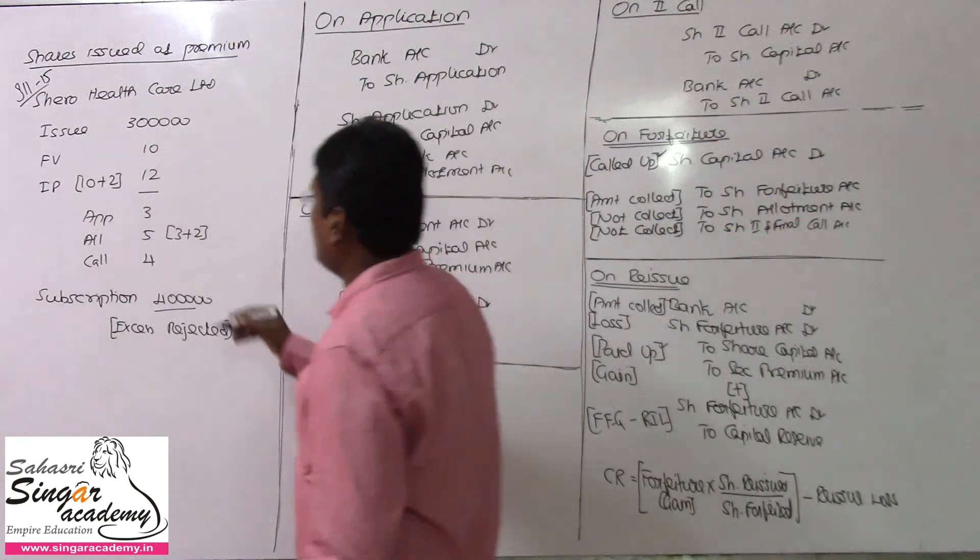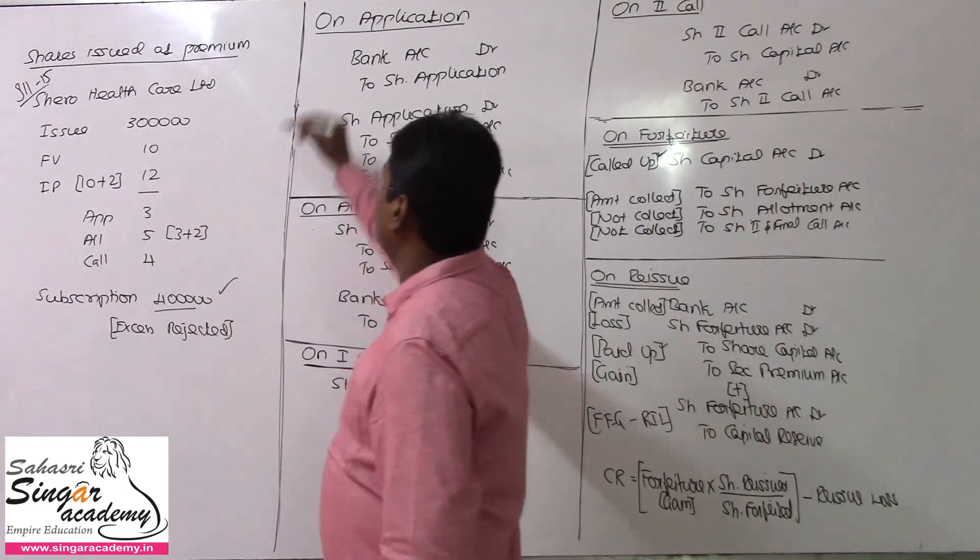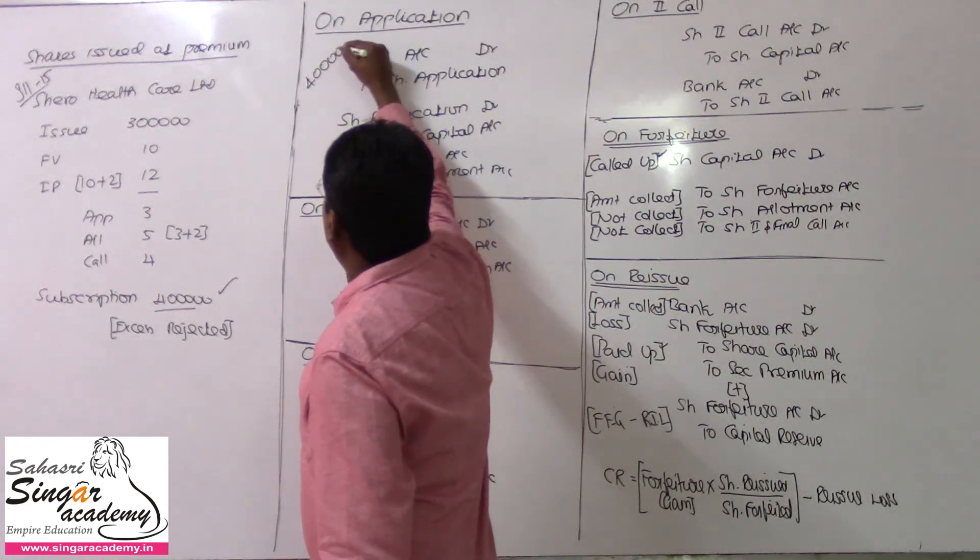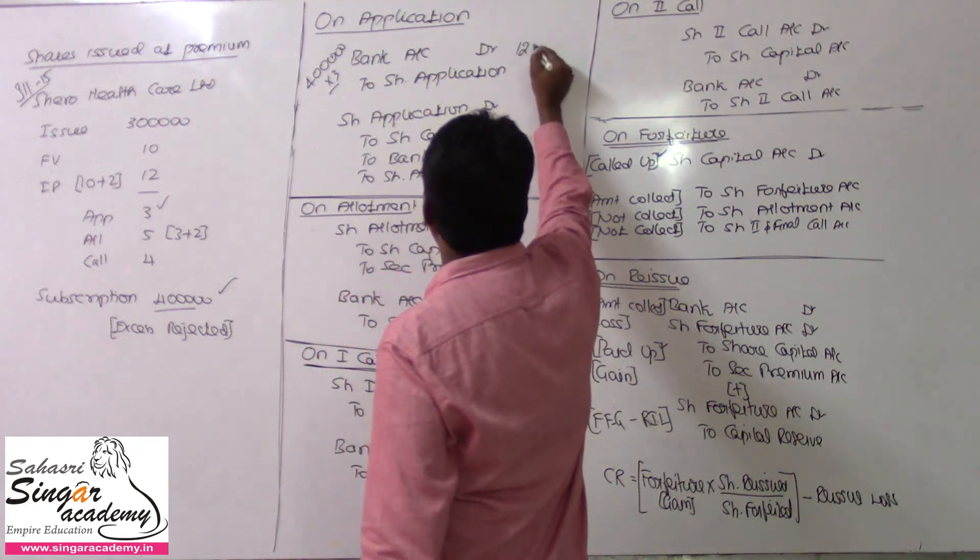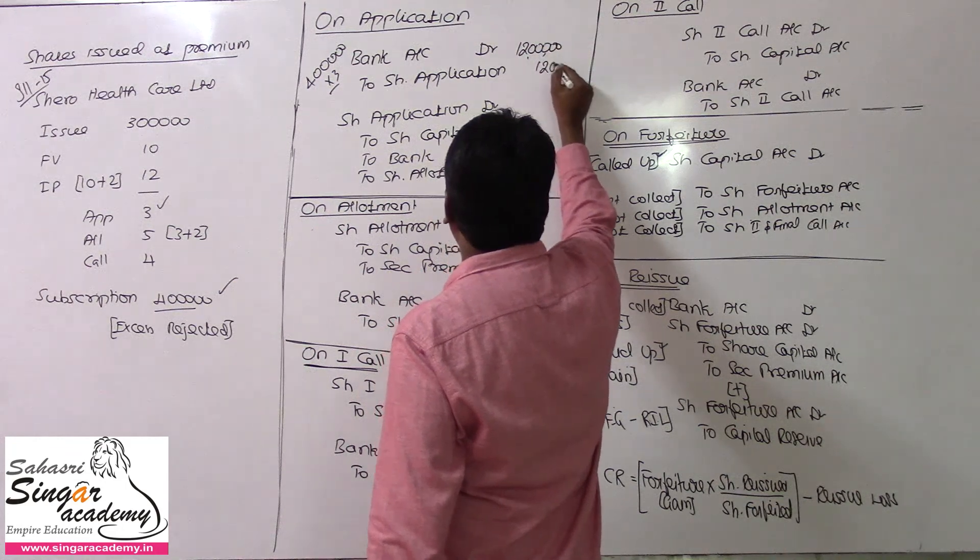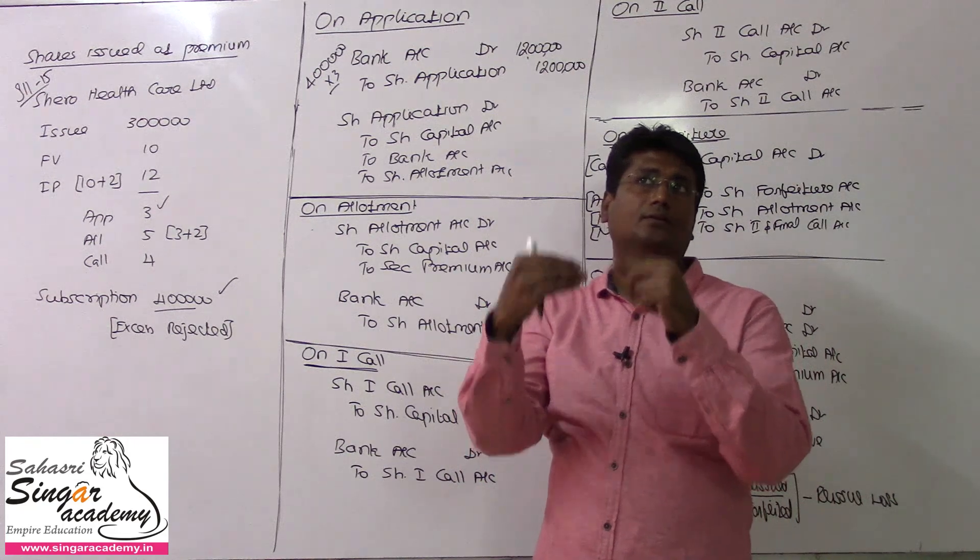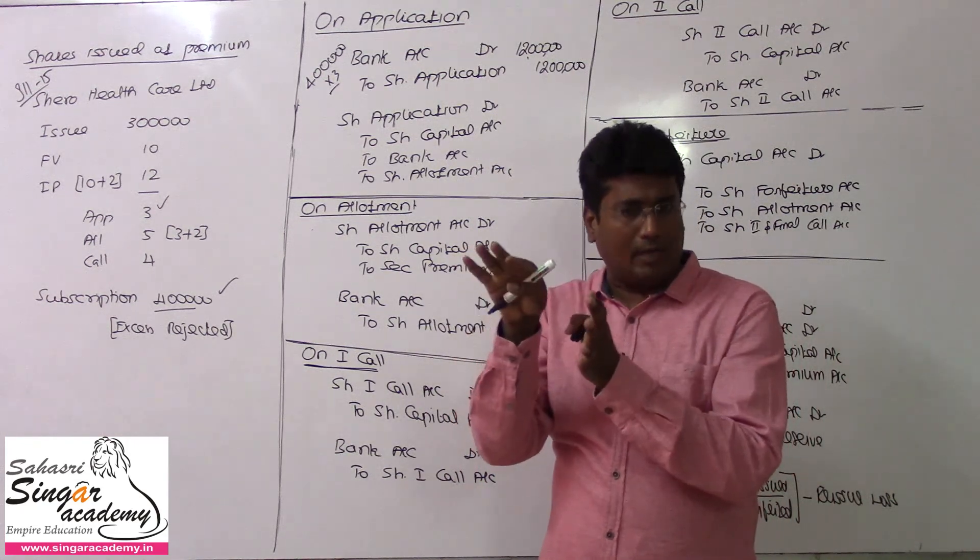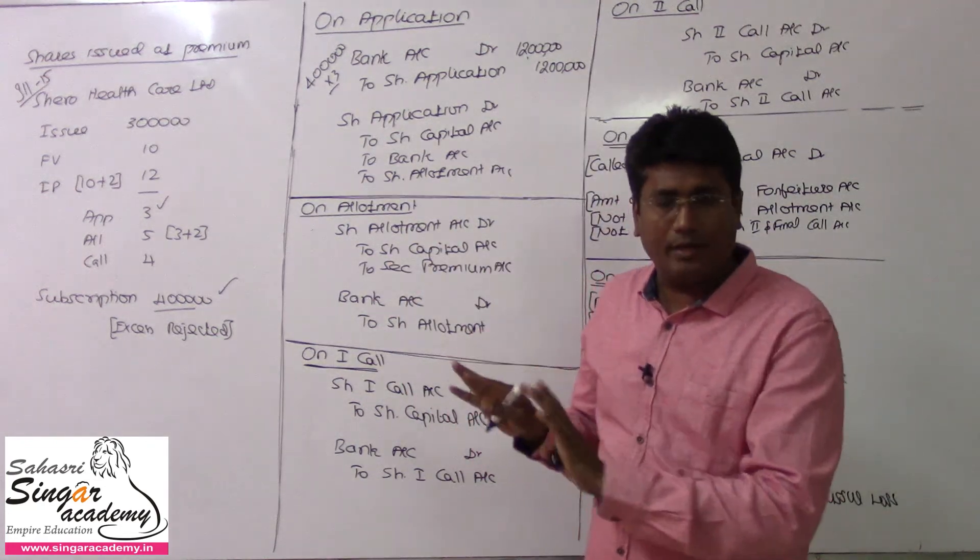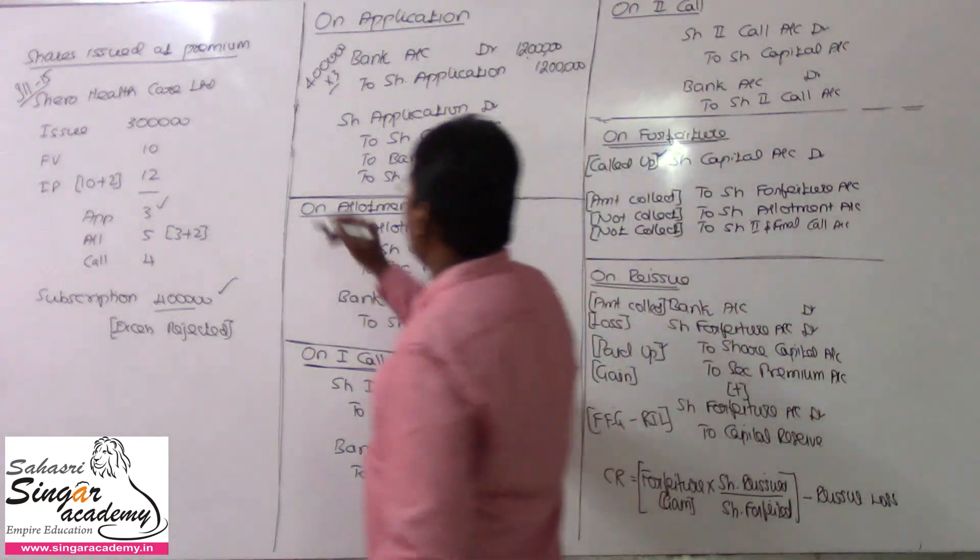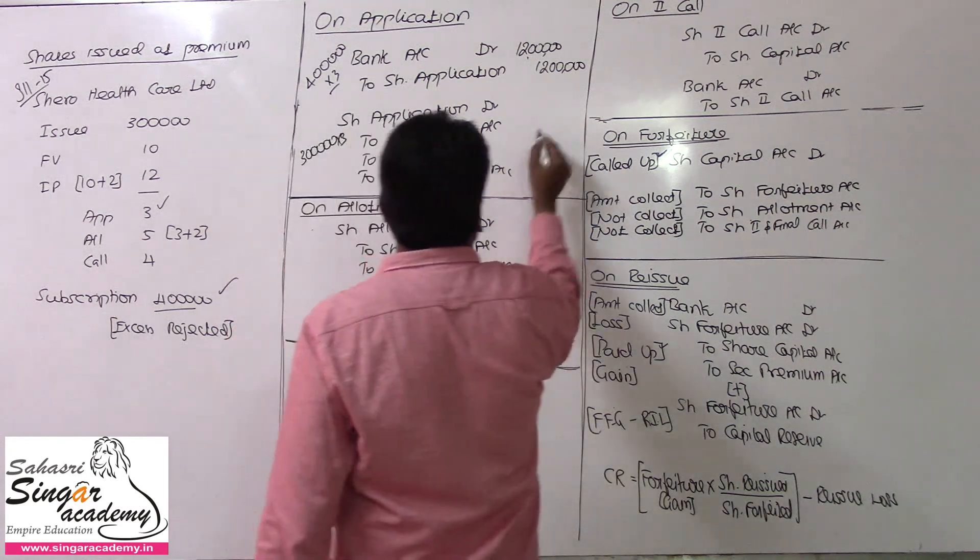Let's start. 4 lakhs collection should come at application. Bank account debit to share application. 4 lakhs shares, one share application money is 3 rupees, so 12 lakhs rupees we could have collected. Then transferring to capital, share application to share capital. 3 lakhs shares at 3 rupees equals 9 lakhs.